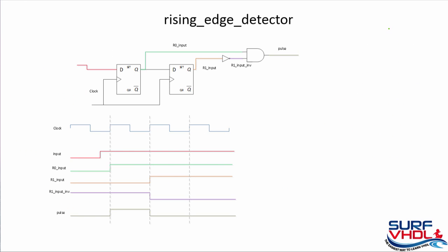The rising edge detector is a simple circuit that detects a rising edge of an input signal. The input signal is latched by a flip-flop on the rising edge of the clock, and the second flip-flop provides a delay of one clock cycle. At the output of the inverter we have the inverted waveform.